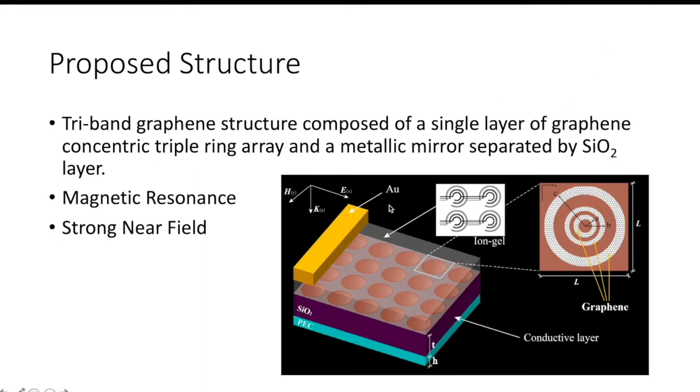Here we have the proposed structure. The proposed structure is a tri-band graphene structure composed of a single layer of graphene concentric triple ring array. We can see the array of nano rings and a metallic mirror separated by silicon dioxide glass.